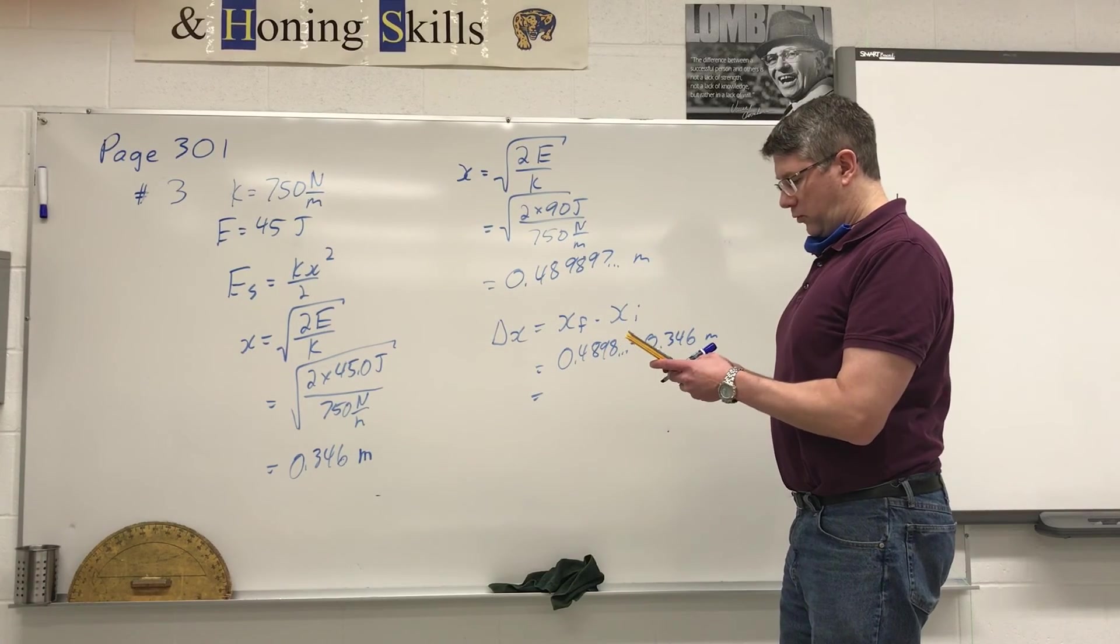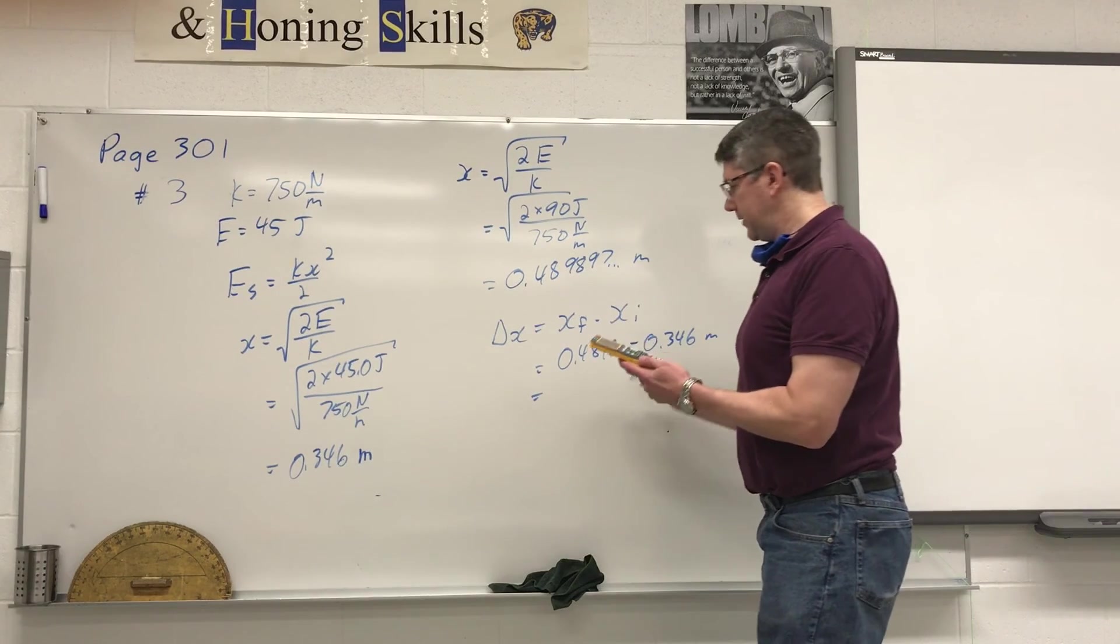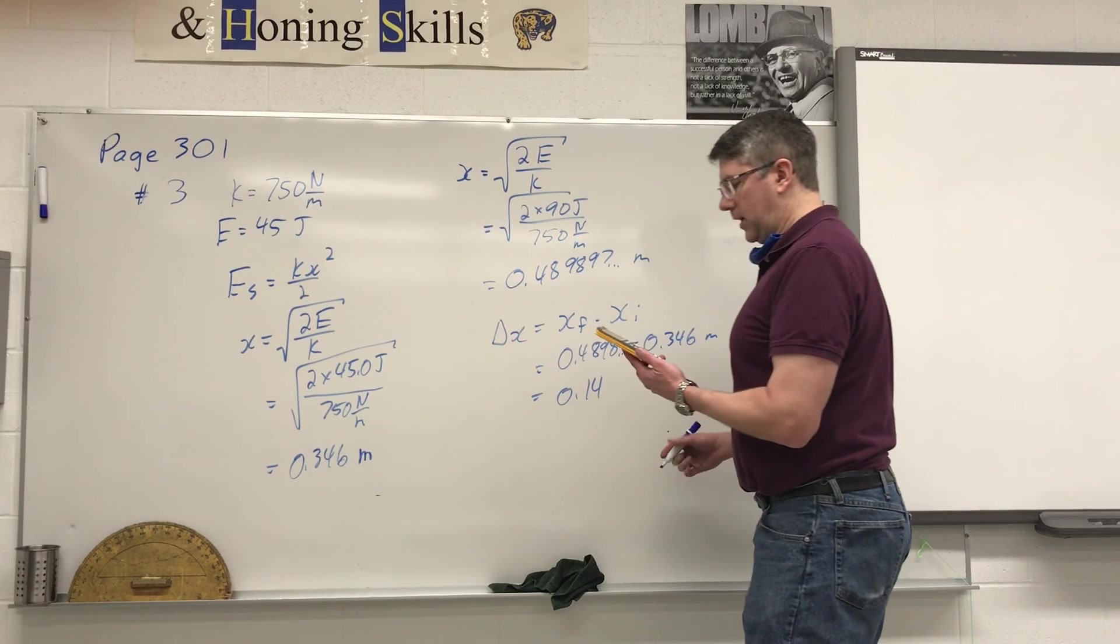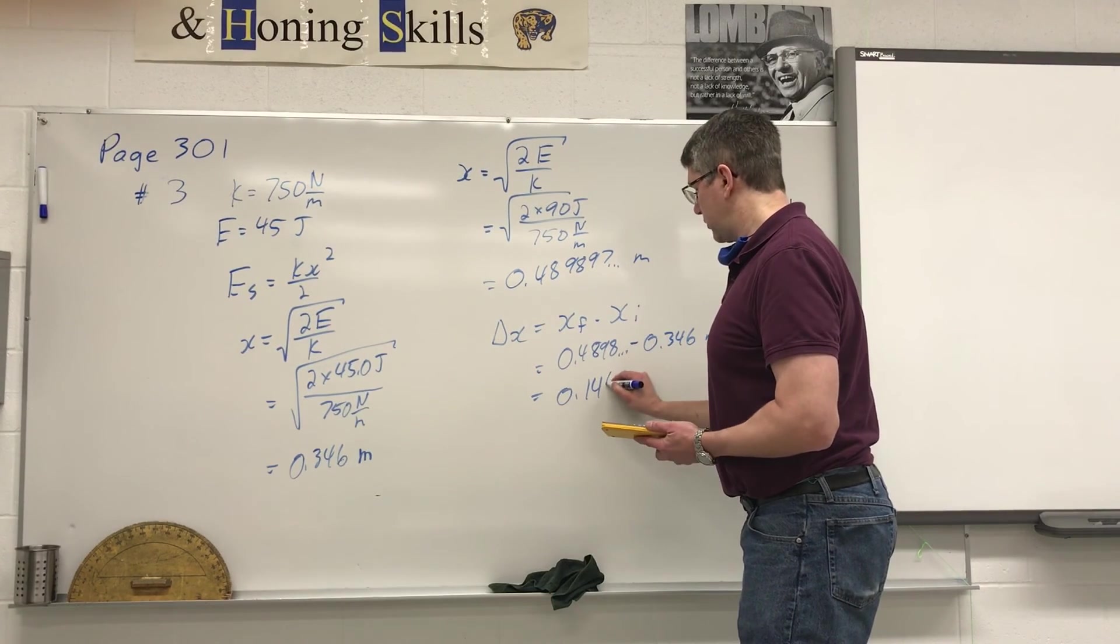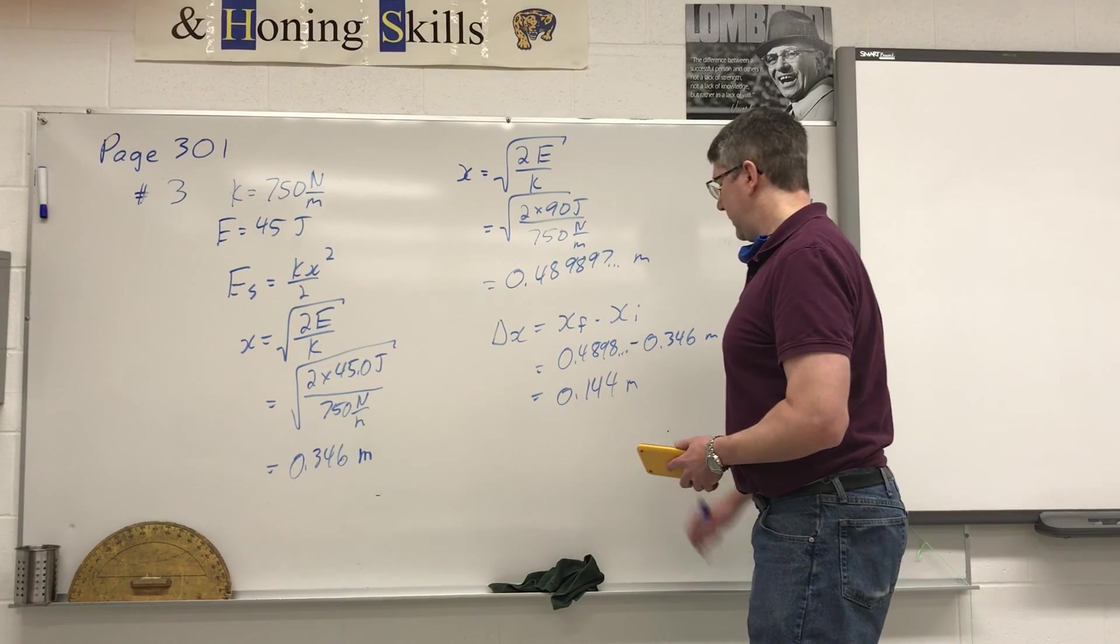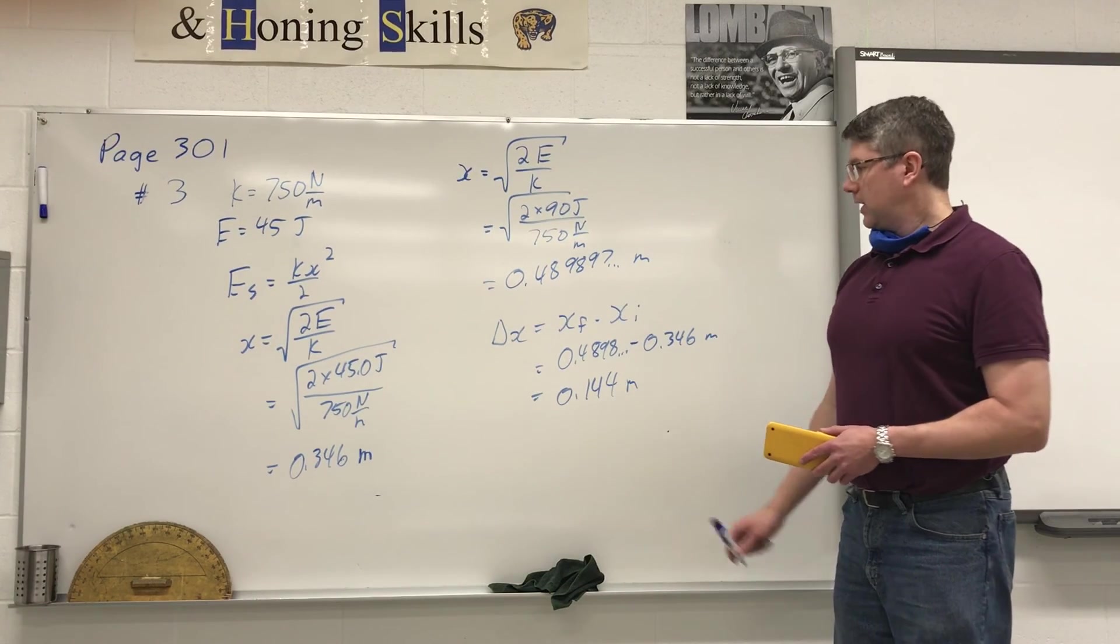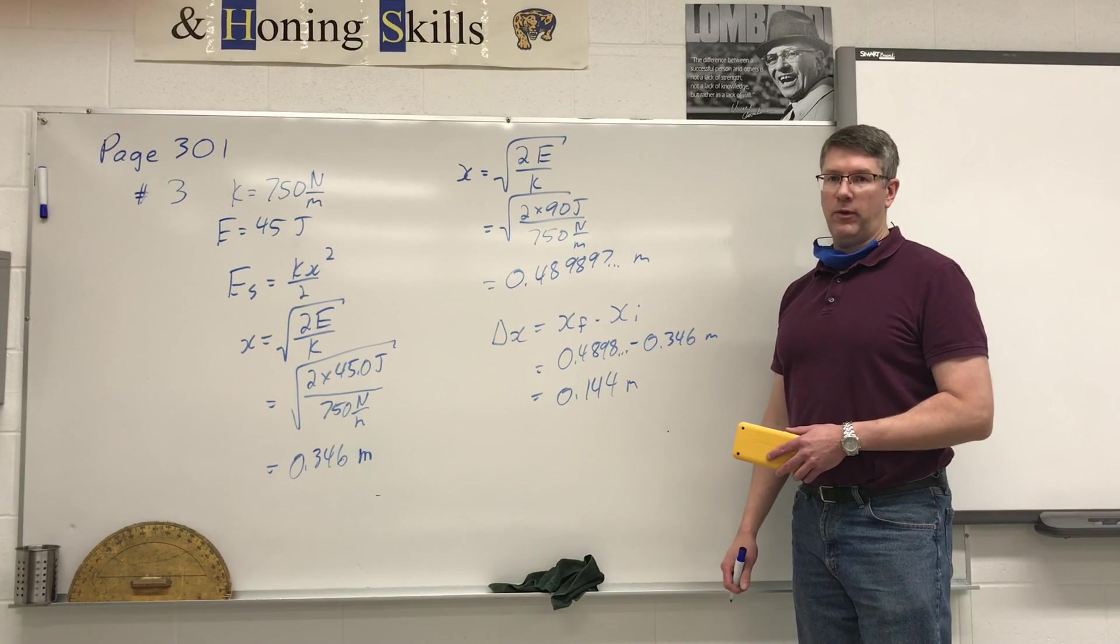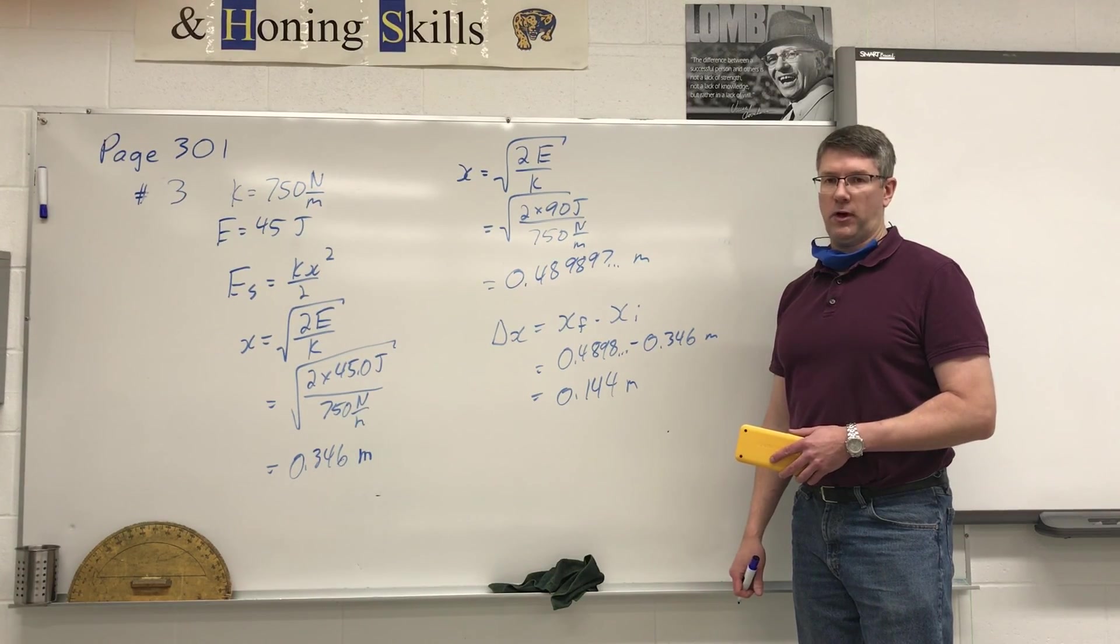Minus 0.346 gives me an answer of 0.143. The eight causes the three to round up, so 0.144 meters as the new length. So we have to change the length by 14.4 centimeters in order to double the amount of energy that will be stored in this spring.